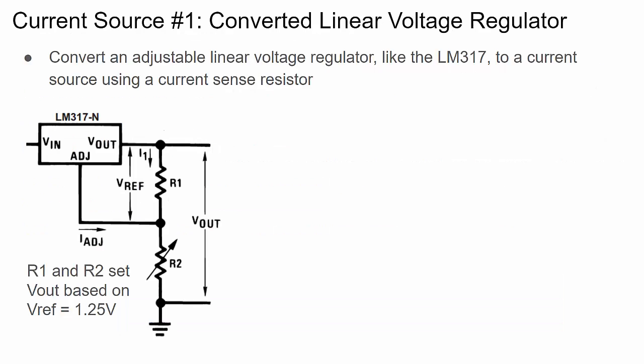For the first design we're going to take a linear voltage regulator and convert it into a current source. There are many linear voltage regulators available — they take an input voltage and produce a set, lower output voltage. For this video we're going to use an adjustable one as an example.